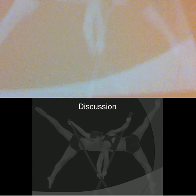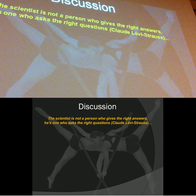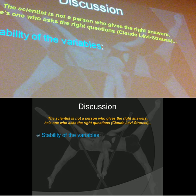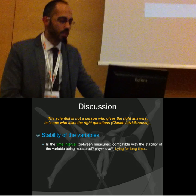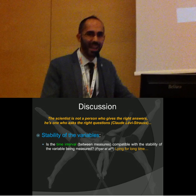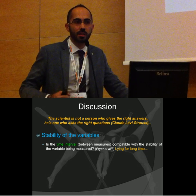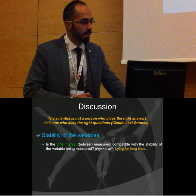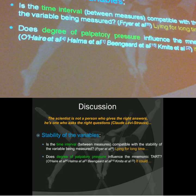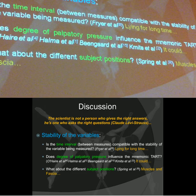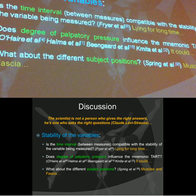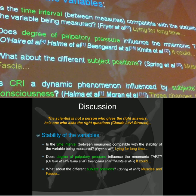What can we say? The person who gives the right answer is the one who asks the right questions, so let's discuss what we saw. On stability: is the time interval compatible with stability of the variable being measured? Prior et al. focused on the change of motion of the patient and said that lying for a long time during the experiment doesn't help reliability because we can change the patient's situation. On degree of palpatory pressure — the force we apply with our hands — the TART mnemonic could also influence findings, with many authors supporting this. Spring et al. said there is modification and change in muscles and fascia that can actually change the reliability.